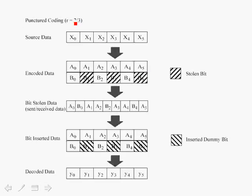In the case of a two-thirds code rate, we have 6 bits going through the convolutional encoder, producing 12 bits. We're tossing away 3 bits, so we're left with 9 bits. Taking the ratio between 6 and 9 bits, we obtain the two-thirds coding rate.